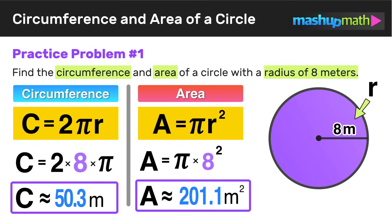Remember that area is always represented in square units. Now that you have some experience using those circumference and area formulas, let's go ahead and take a look at another example.